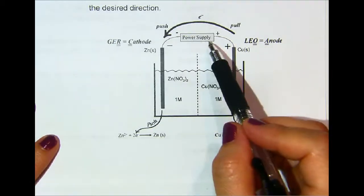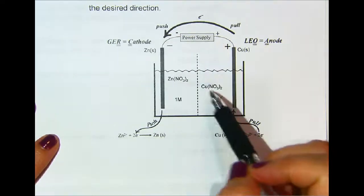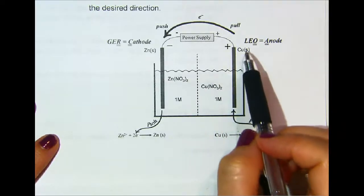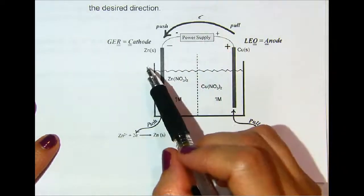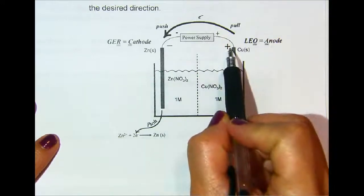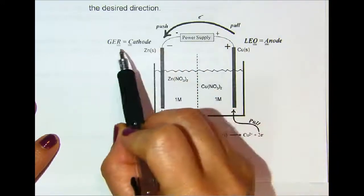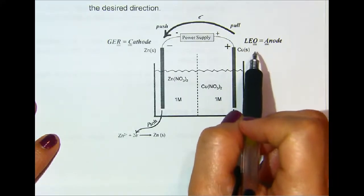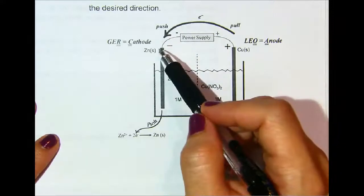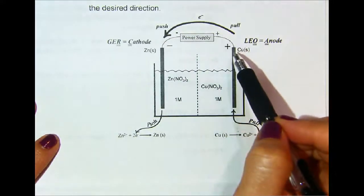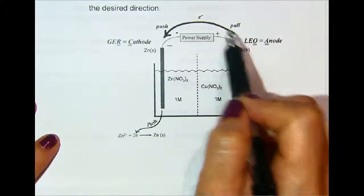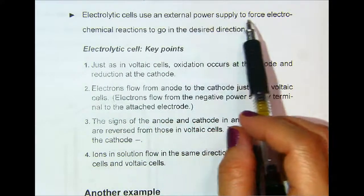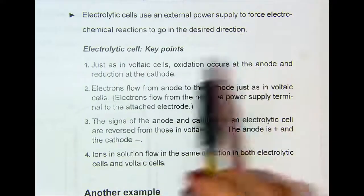Because the voltage of the external power supply is greater than the voltaic cell potential, electrons are forced to flow in the opposite direction in the electrolytic cell. Normally the positive end would be the cathode and the negative end would be the anode, and normally electrons flow from anode to cathode — from the negative to the positive. But in this case, we are forcibly moving from the positive to the negative. Electrolytic cells use an external power supply to force electrochemical reactions to go in the desired direction.